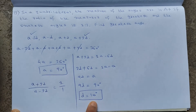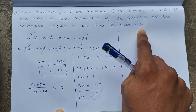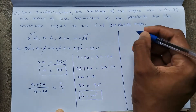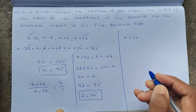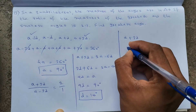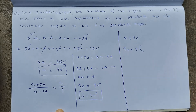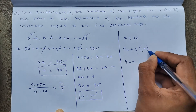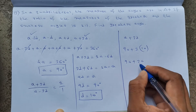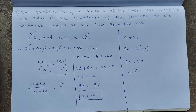We have A = 90° and D = 10°. The greatest angle is A + 3D = 90 + 3 × 10 = 90 + 30 = 120°.